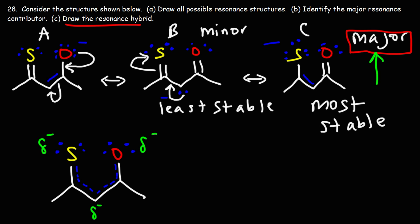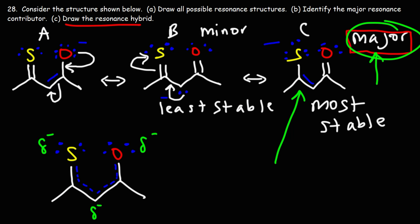So the real resonance hybrid is going to look more like structure C than like the other two. It's not going to be exactly that structure, but the majority of it will look like this, because this is the most stable structure. The closer the two structures are in energy, the more similar they will resemble in actuality.